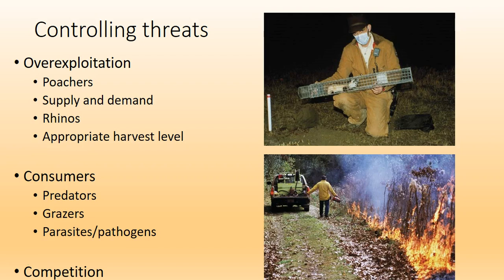When managing, you also have to control threats. If a species needs management because it's over-exploited, you need to manage poachers so they can't come in and kill things. You need to fix supply and demand — for example with rhinos, their horn is wanted medicinally, so you'd have to address demand and teach people that they don't actually need keratin protein to get better.